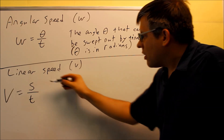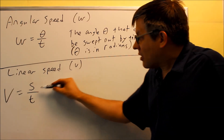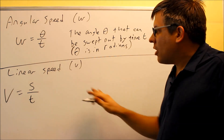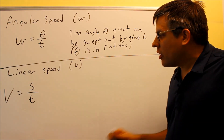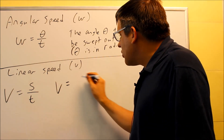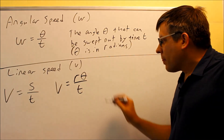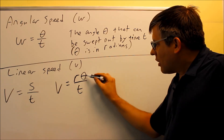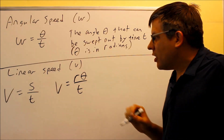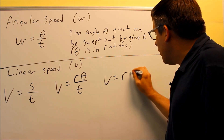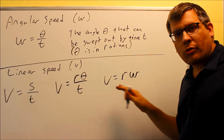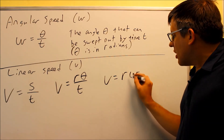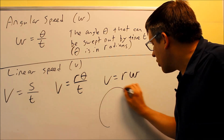Linear speed is a type of speed you might be familiar with — it's distance divided by time. Because we're talking about circles and angles, s is your arc length. So we can say v equals r times theta over t. Since r times theta is arc length and theta over t is omega, we get the formula v equals r times omega. You need to know the radius and your angular speed omega.